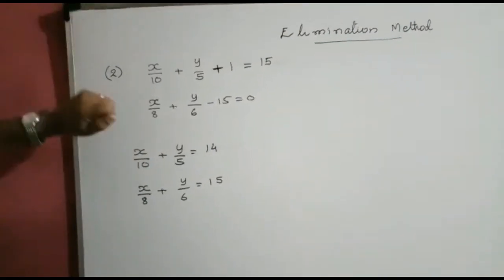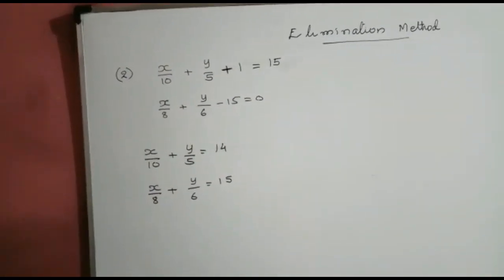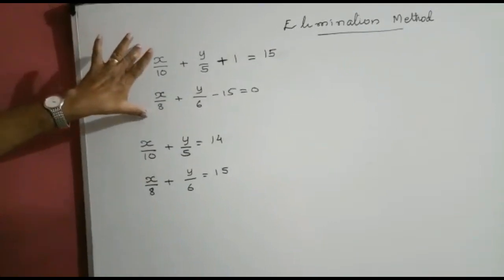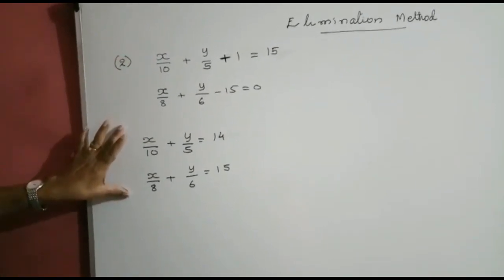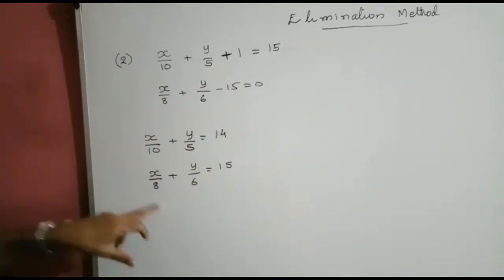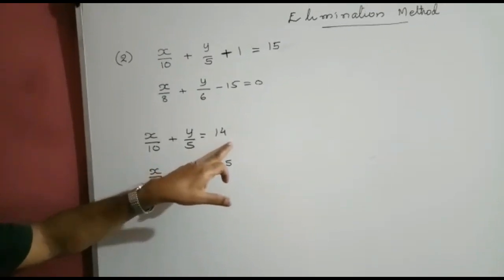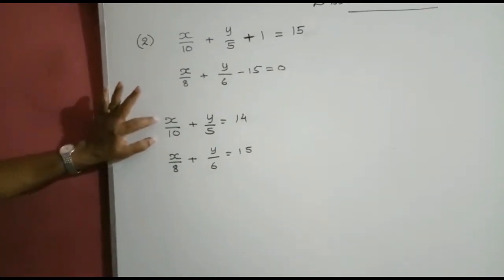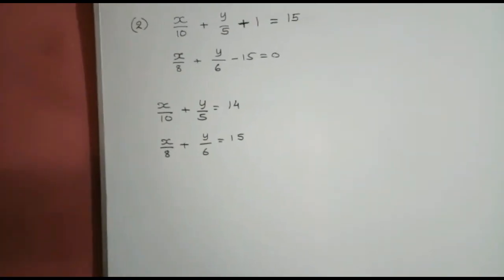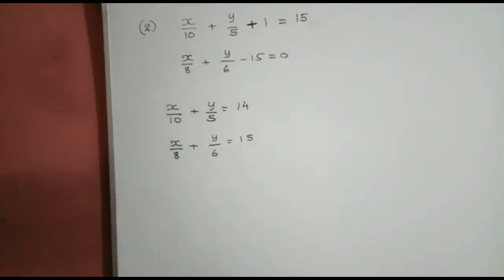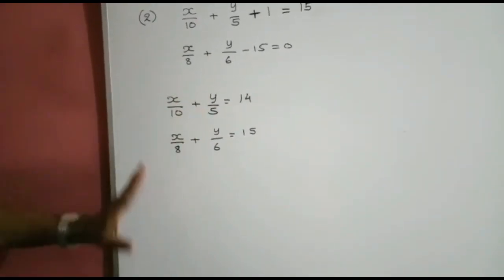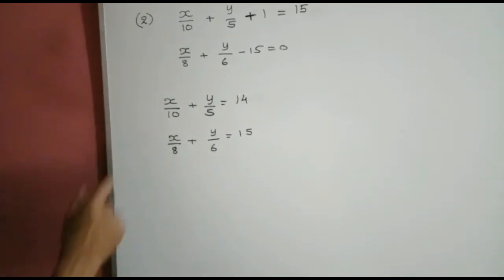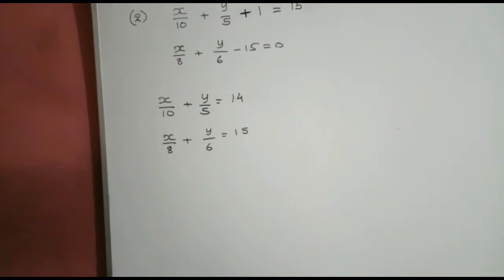Let us consider another example: x by 10 plus y by 5 plus 1 equals 15, and x by 8 plus y by 6 minus 15 equals 0. Rewriting: x by 10 plus y by 5 equals 14, and x by 8 plus y by 6 equals 15. Since the coefficients of x and y are fractions, we take the LCM to express each equation with integral coefficients, making calculations simpler.